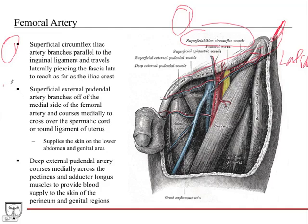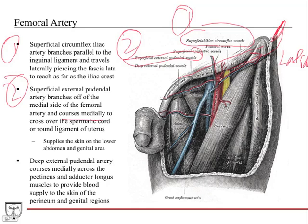The superficial external pudendal artery comes off the medial proximal aspect of the femoral artery and courses medially to cross over the spermatic cord — or the round ligament in females. It then supplies the skin of the lower abdomen and the genital area.